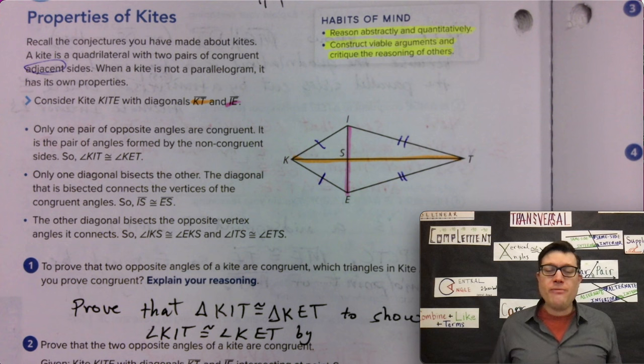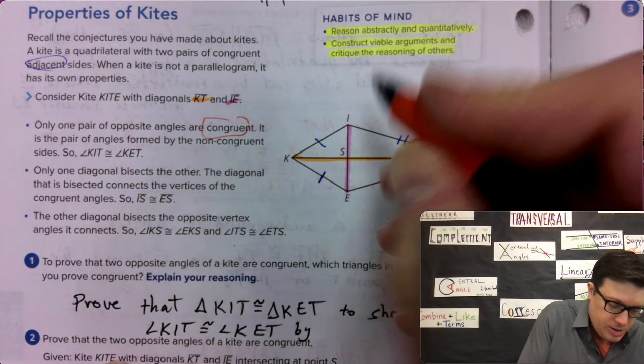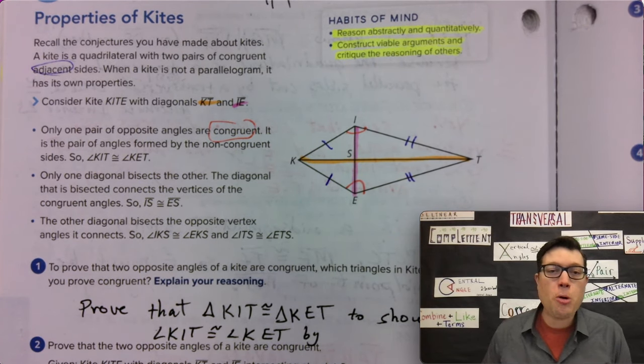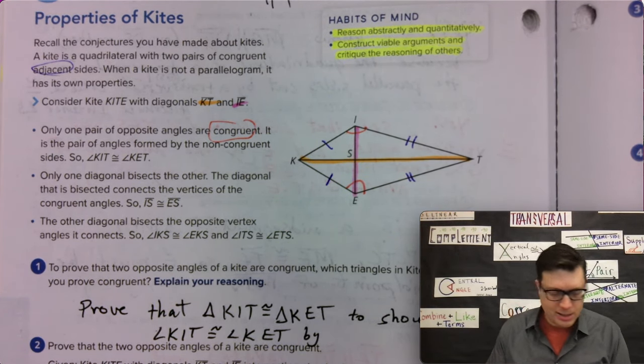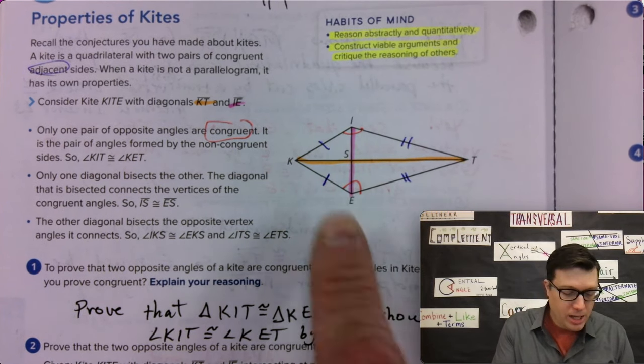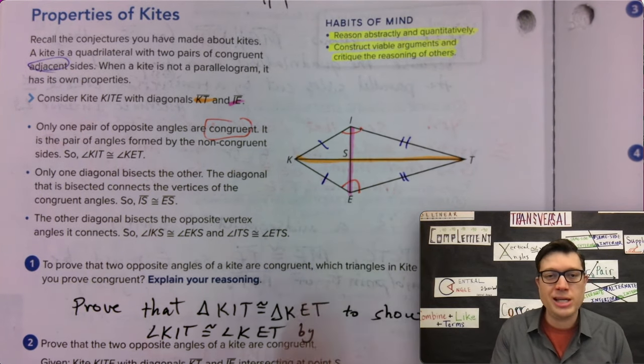Only one pair of opposite angles are congruent. So, here's the first one. That's this angle and this one. It's the pair of angles formed by the non-congruent sides, right? Like one spike and two spike, where those meet is going to be the same angle as where one spike and two spike also meet. So, angle I and angle E.